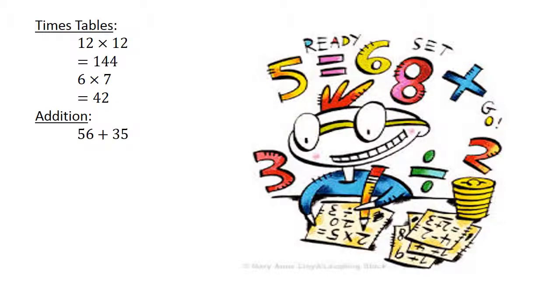Addition. 56 plus 35 equals 91. Subtraction. 16 minus 57 equals negative 41.